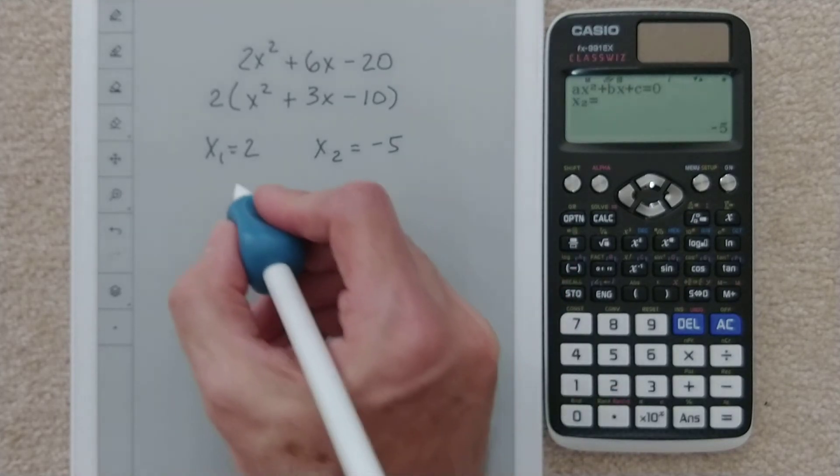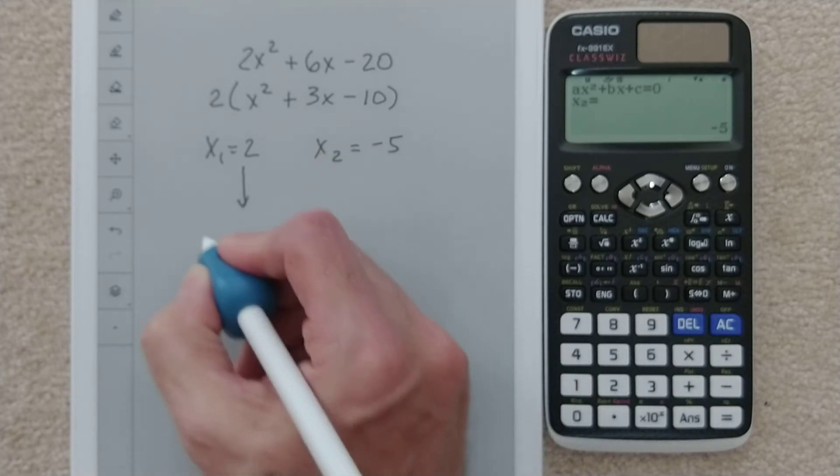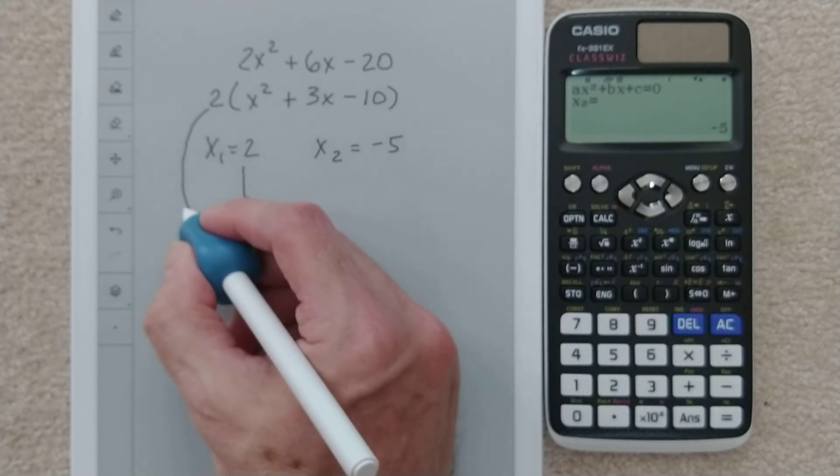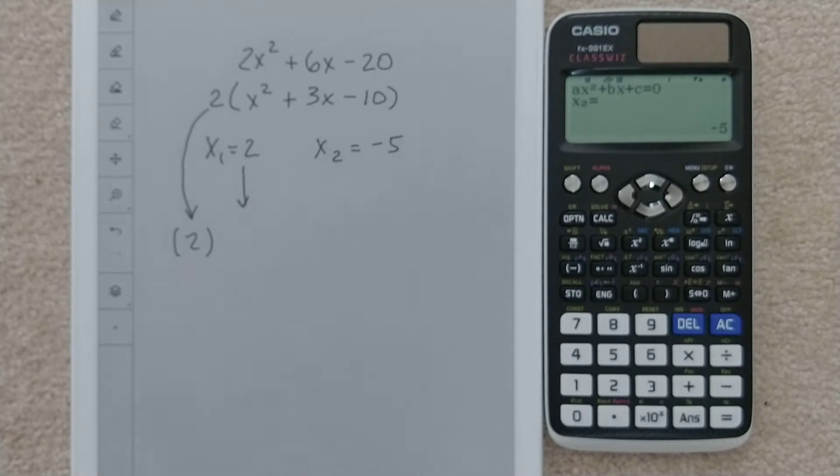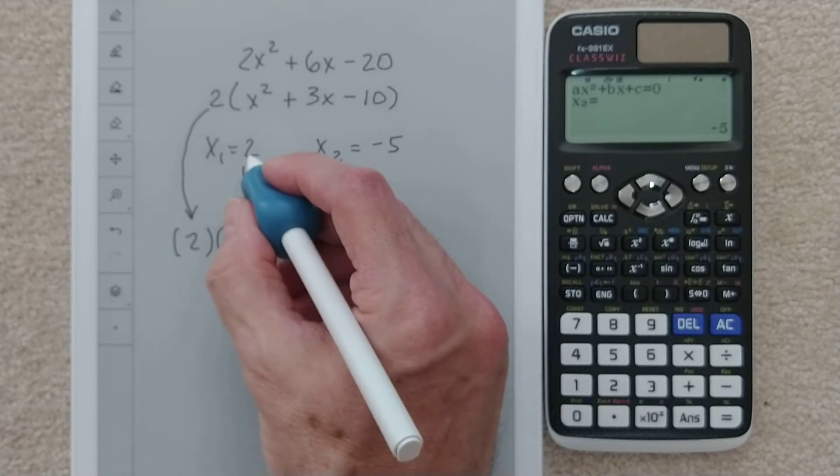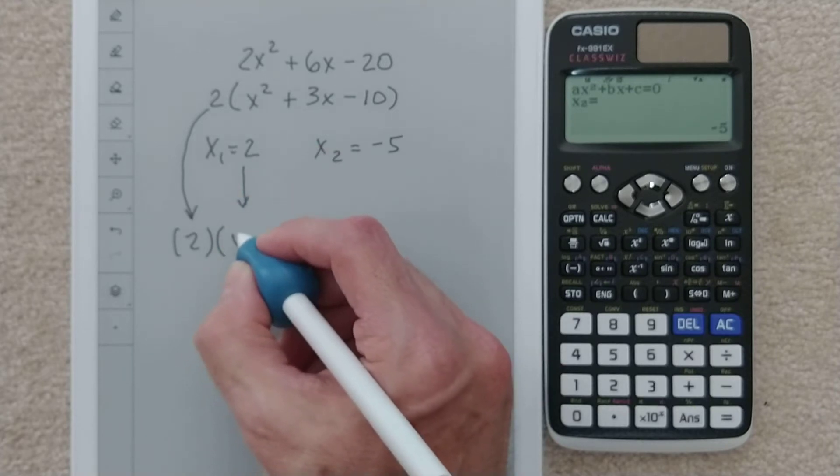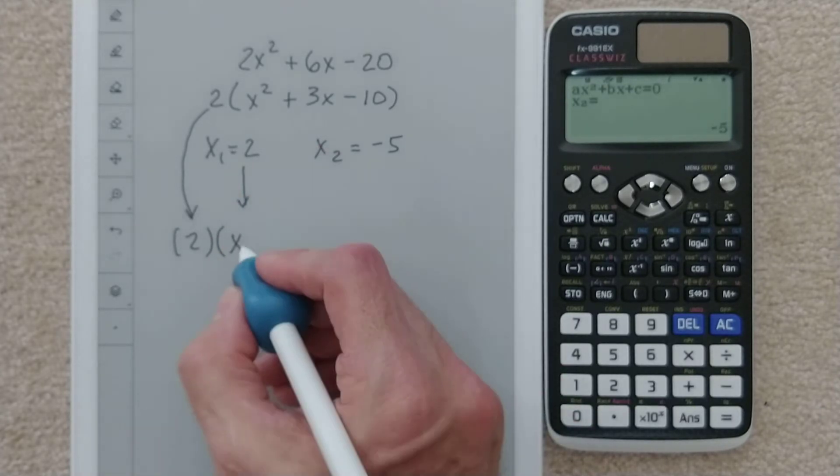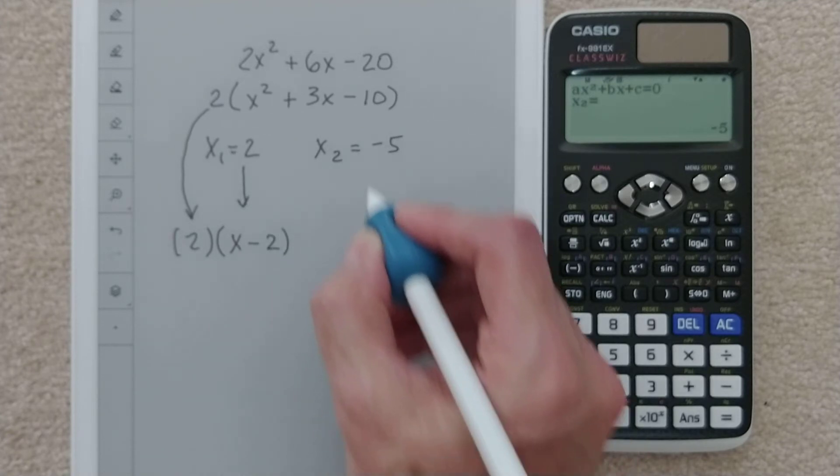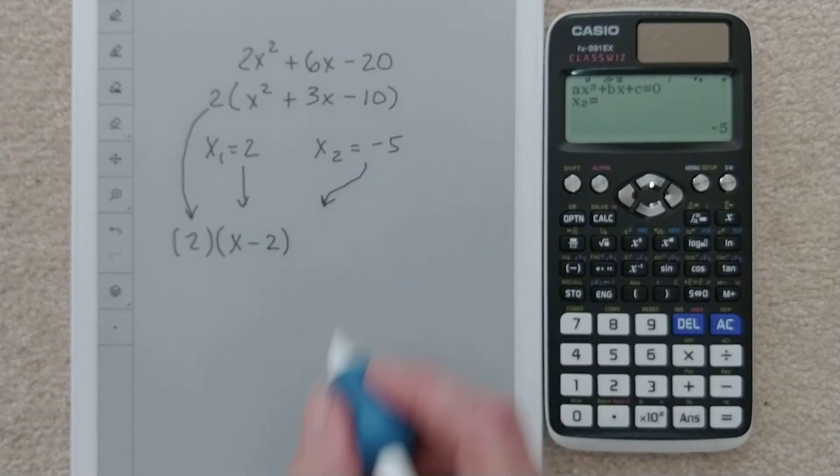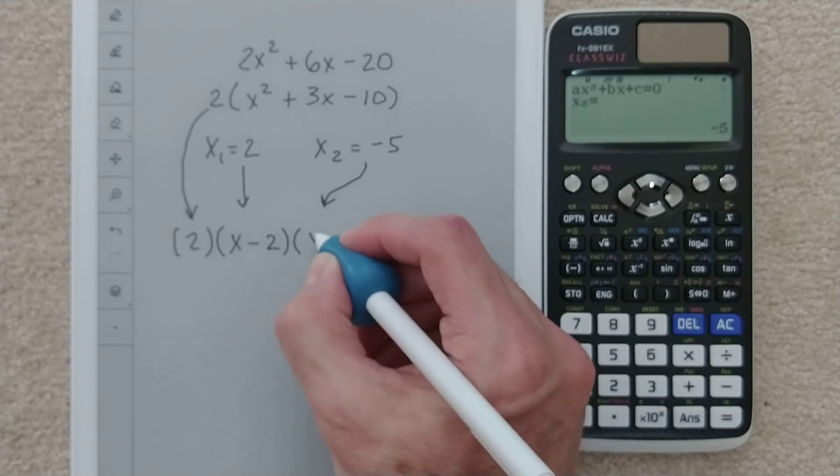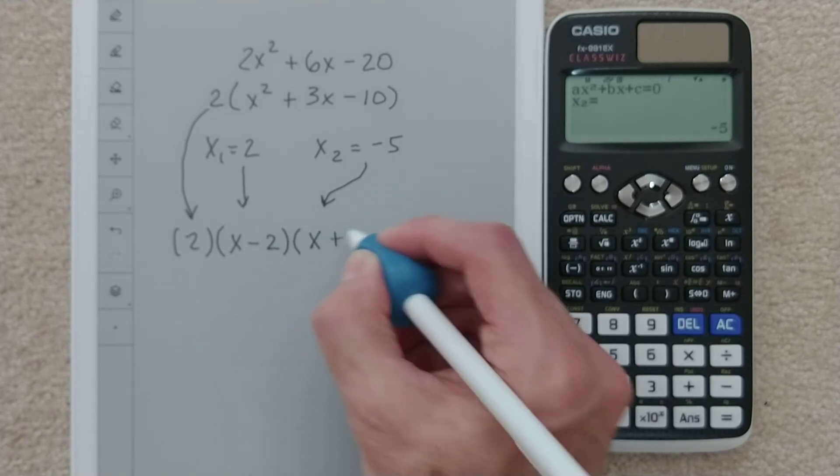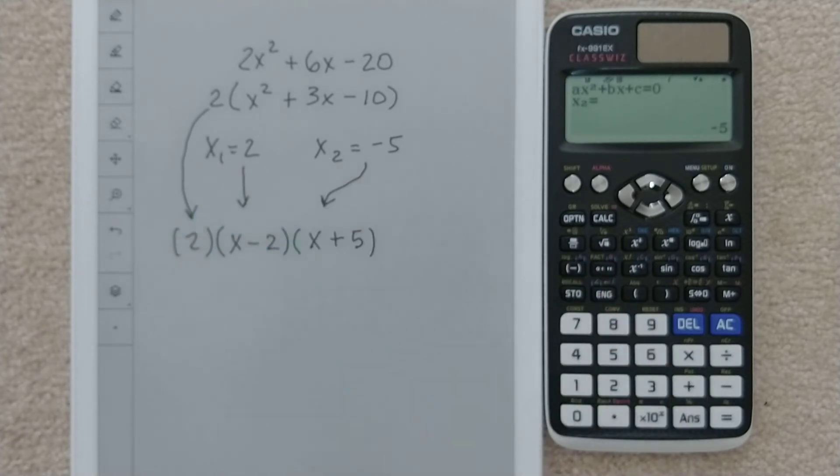And now to turn those into factors, all we have to do... Oh, let me do one other thing. Since we factored out that 2, I want to put that out front first. And then here, if you've had a root as positive 2, you're going to do the corresponding factor as x minus 2. And then here, we have x2 as negative 5. So our factor will be x plus 5. The x1 and the x2 don't mean anything. It's just how the calculator spits it out. They're both x values. And so this is our final answer. We are done.